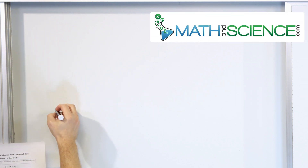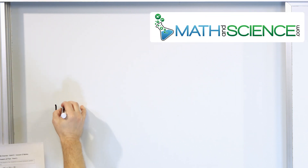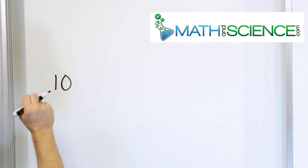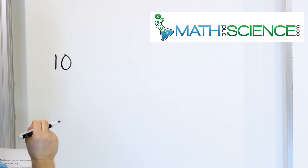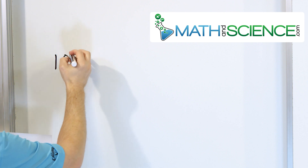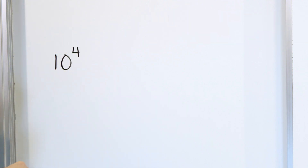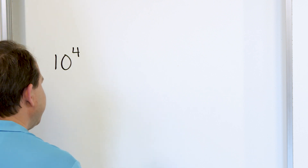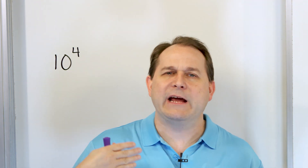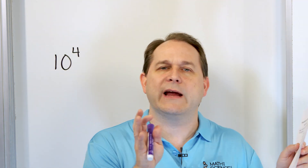Let's talk about this idea of an exponent. So if I have the number 10, exponents when we apply them to the number 10 — in other words, powers of 10 — what does this actually mean? An exponent is when you have the little number raised up above. It's just a faster way of multiplying something. We do multiplication so much that we have a shorthand way of writing it down called an exponent.